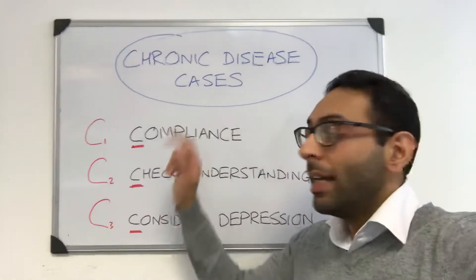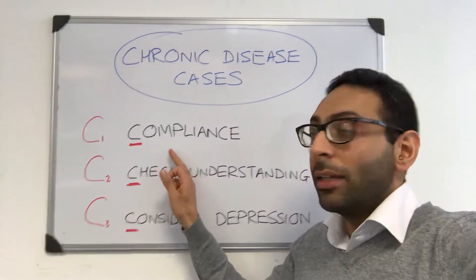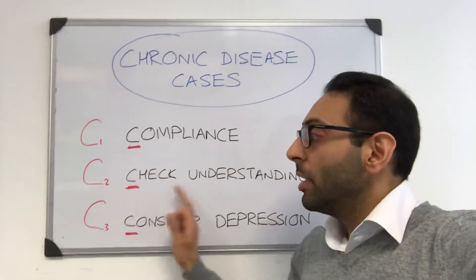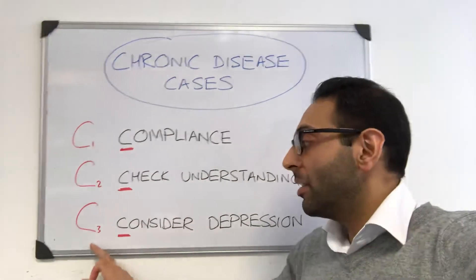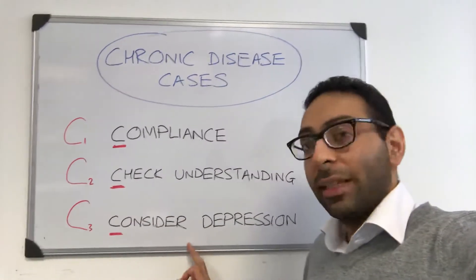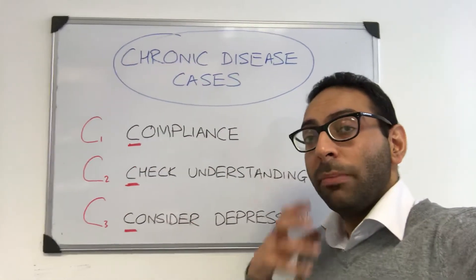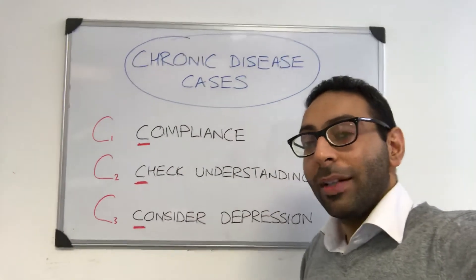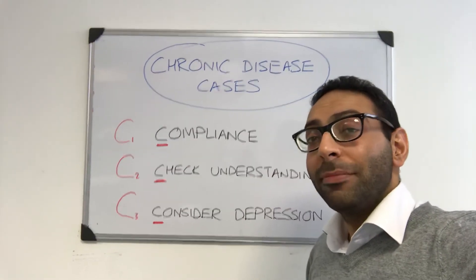So in any chronic disease case: C1, compliance; C2, check understanding of the condition; and C3, consider depression. Any one of these three things could be the main thing going on in that situation. Hope this helps.